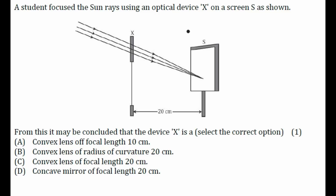Let's answer this question from the chapter 'Light' based on the concept of lenses. A student focused the sun rays using an optical device X on a screen, as shown. This is our optical device and this is the screen. Sun rays coming from the Sun are parallel to each other.